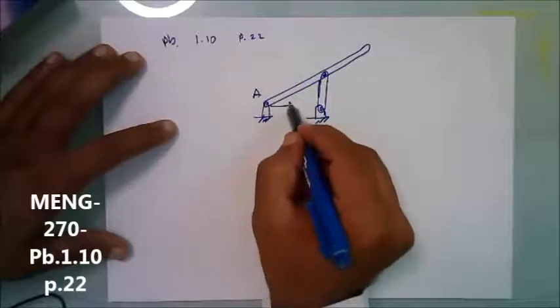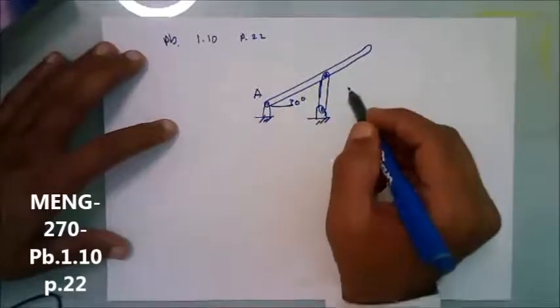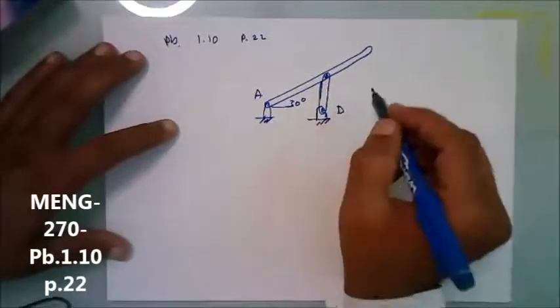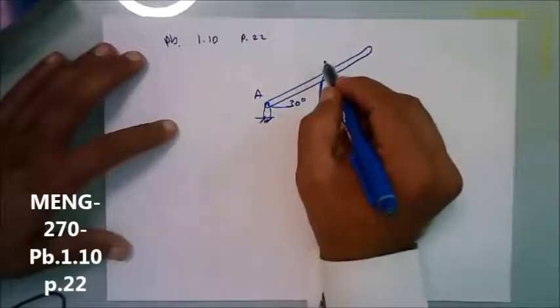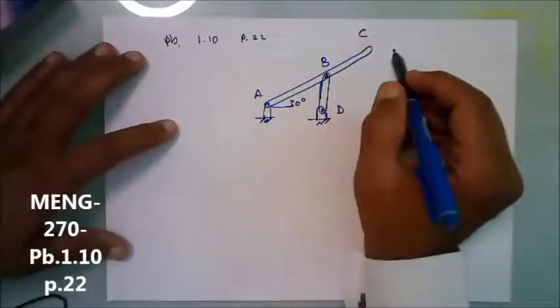This is point A, this is 30 degrees, and this is point D. This is point B, and this is point C.